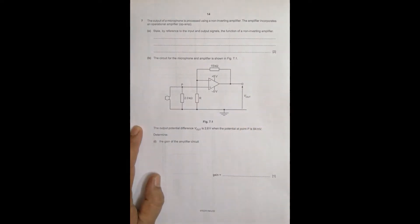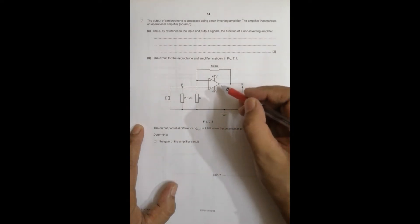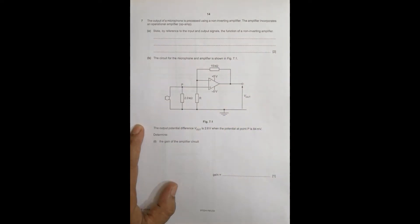Hello folks, this is May June 2020 paper 41 and the question number is 7. This question is concerned with the chapter electronics and you can see from the diagram that we have got an operational amplifier.